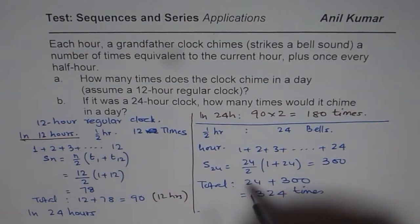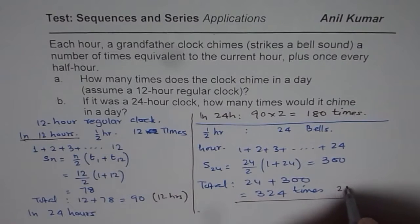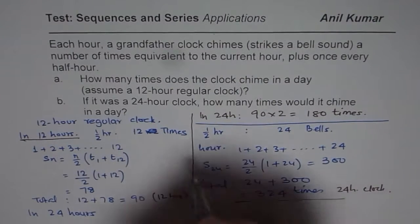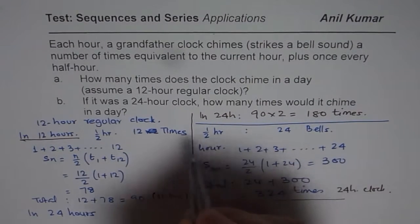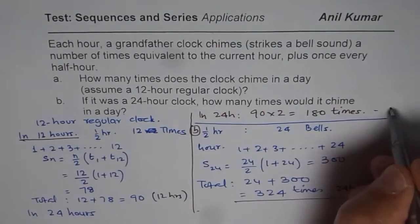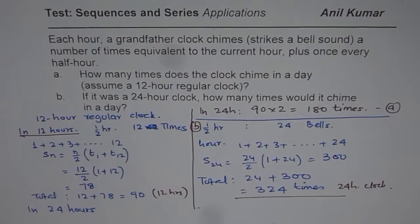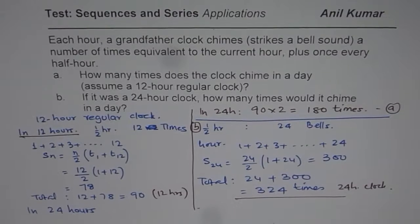So that is 324 times for Part B with the 24-hour clock. These are the calculations for Part B, and 180 times is the answer for Part A. I hope you got an idea of how to solve such a question. I hope that helps — thank you and all the best.